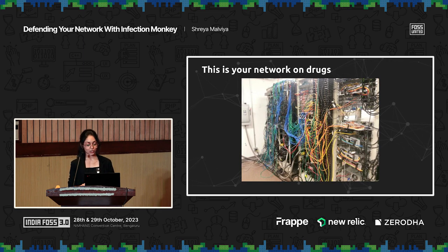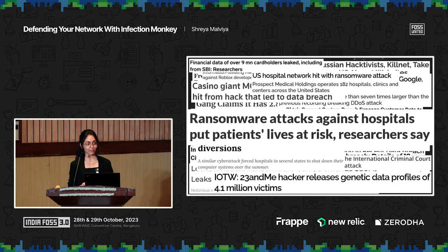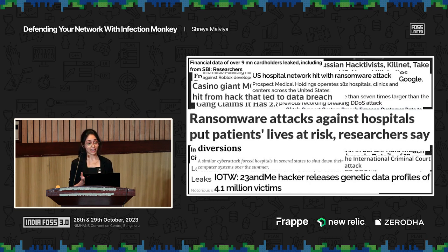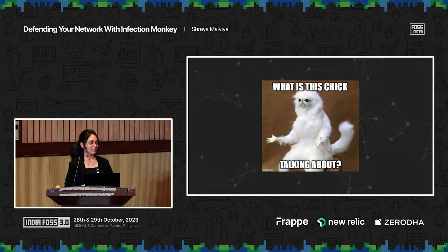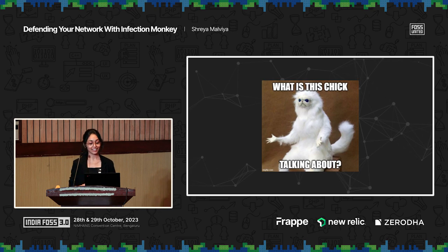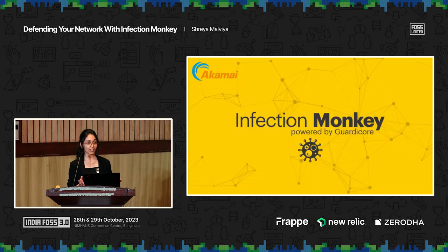All of this leads to a whole lot of problems. What if these organizations just had some magical way of knowing how they were going to be attacked before it actually happened — some magical tool or magic beans or something. That's where Infection Monkey comes in.